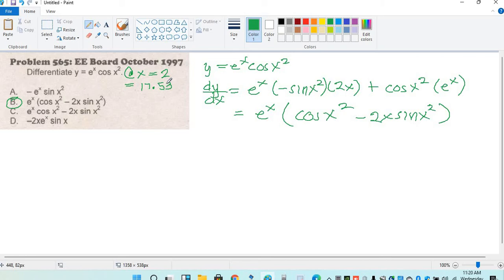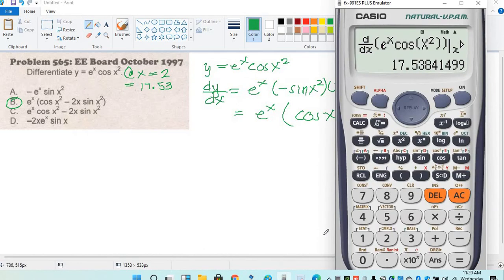So, ngayon, since alam natin na ang answer ay letter B, sobrang natin yung letter B. Sa option naman, ikakak mo yan lahat. So, alam na natin na ikakak mo yung A, B, C, saka D. So, since alam natin na letter B ang answer, double check.